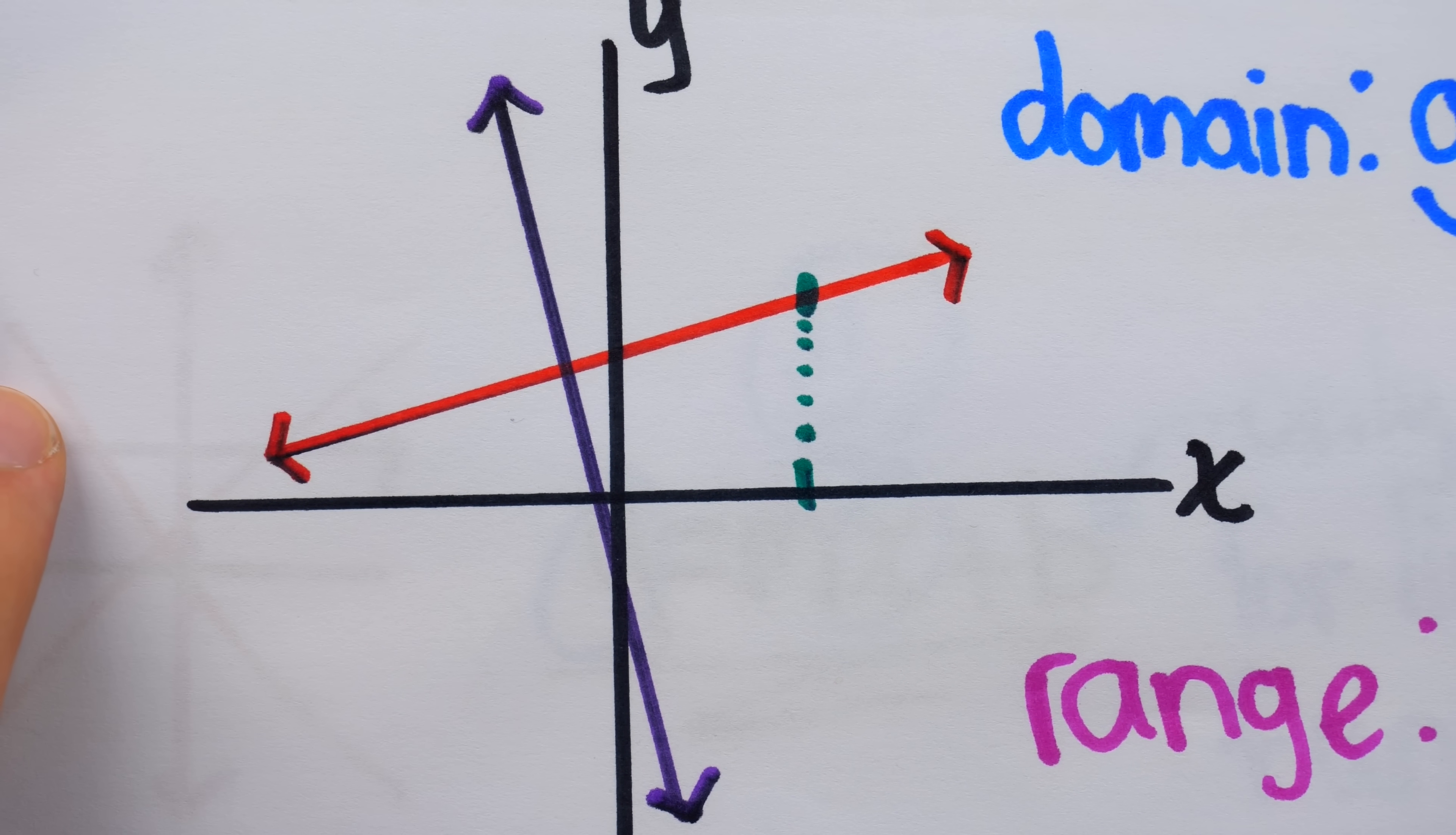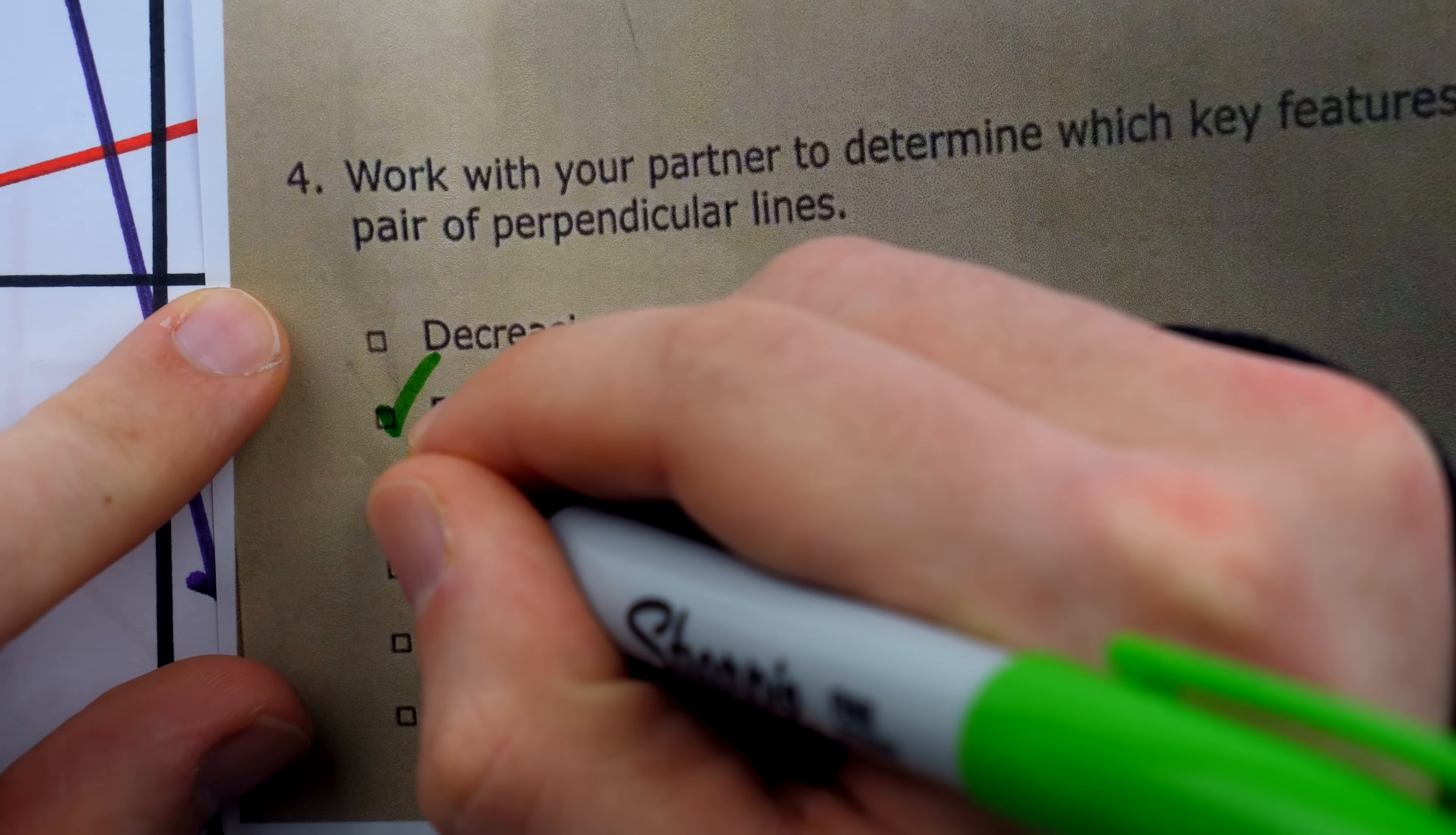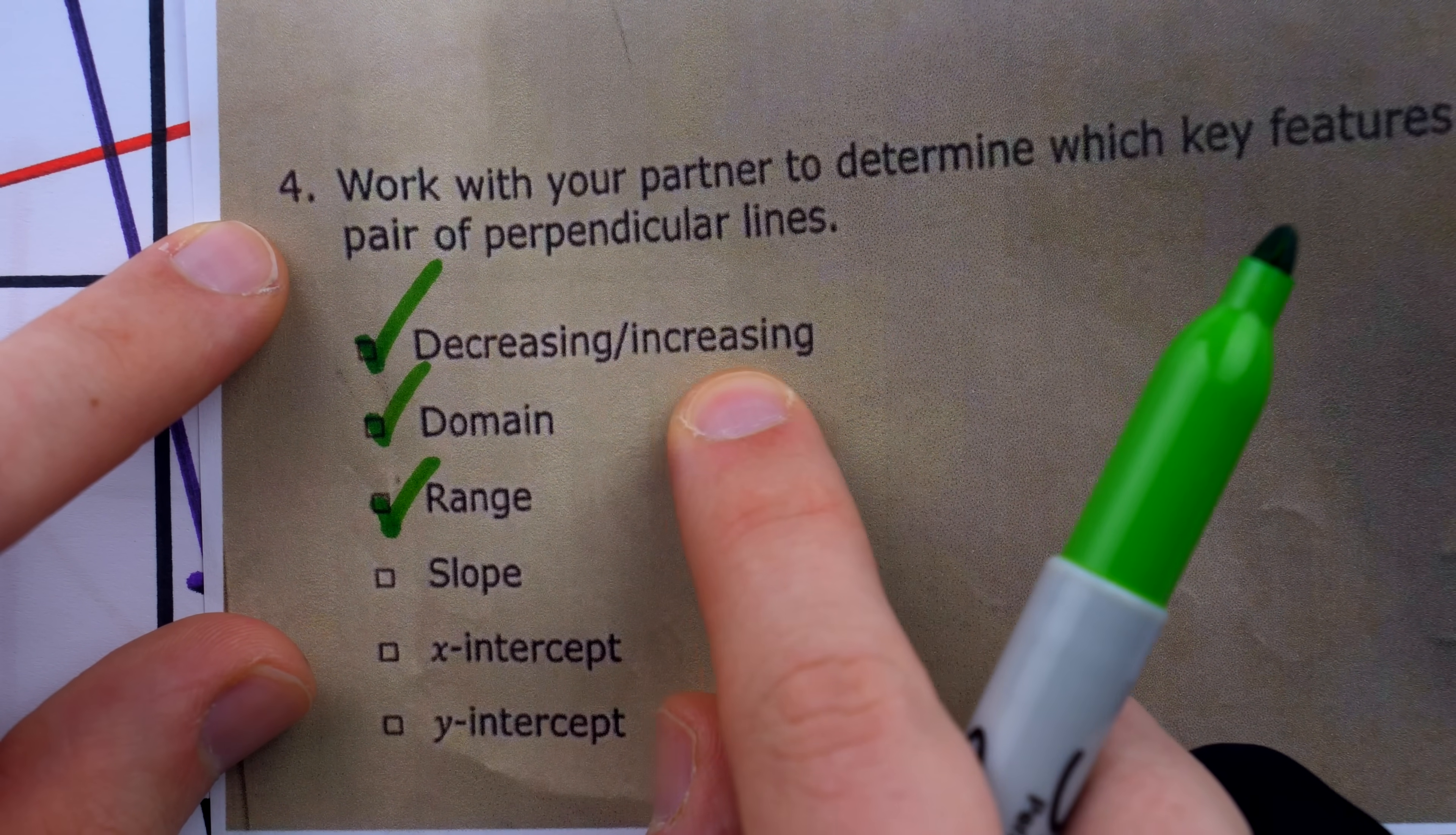all pairs of perpendicular lines are more or less like this. They will always have the real numbers as their domain, and the real numbers as their range. So in that situation we could check this, and check this, and you could even check decreasing slash increasing if you go with that silly interpretation I mentioned earlier, that perpendicular lines occur in increasing decreasing pairs.